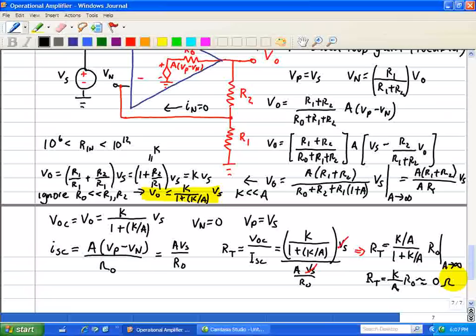So the op-amp circuit with feedback has an output Thevenin resistance that is much smaller than the output Thevenin resistance of the op-amp device itself.